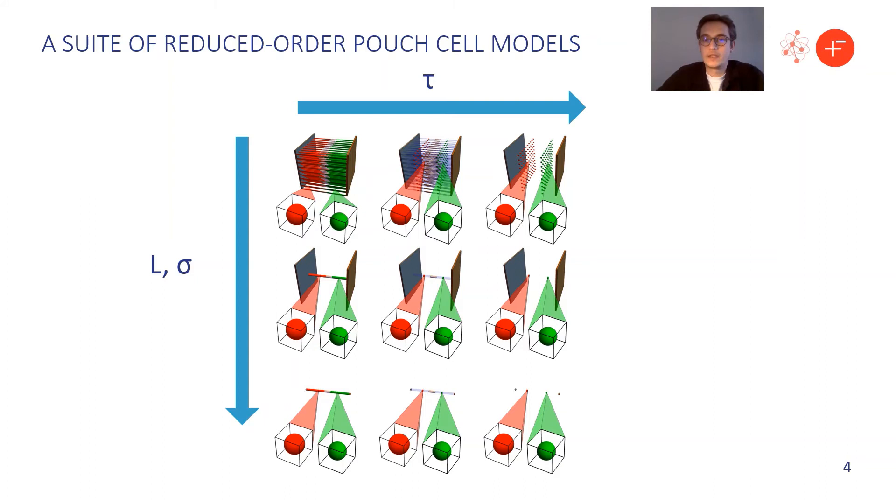Going down the columns instead of across the rows, we make simplifications to the transverse model. These simplifications typically arise because of various different length scales appearing in the model and various conductivities. So typically we're comparing the thickness of the pouch to the height or width, and we're comparing the conductivity of the current collectors to that of the electrode and electrolyte.